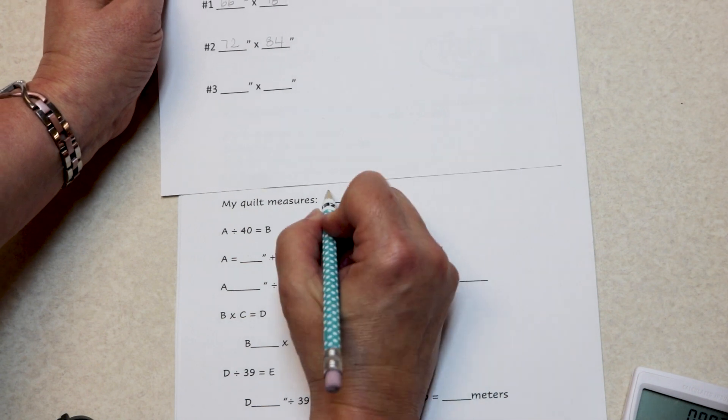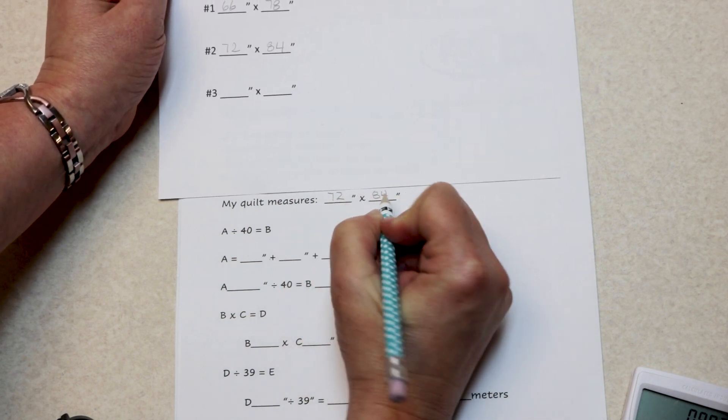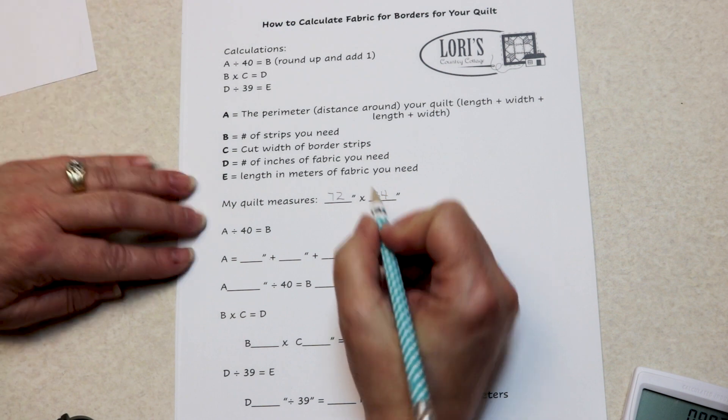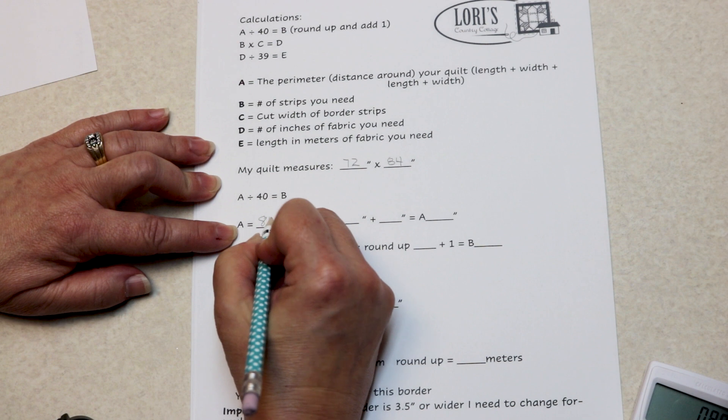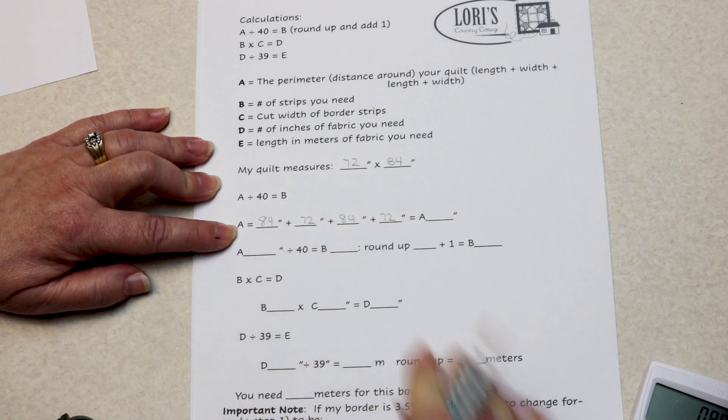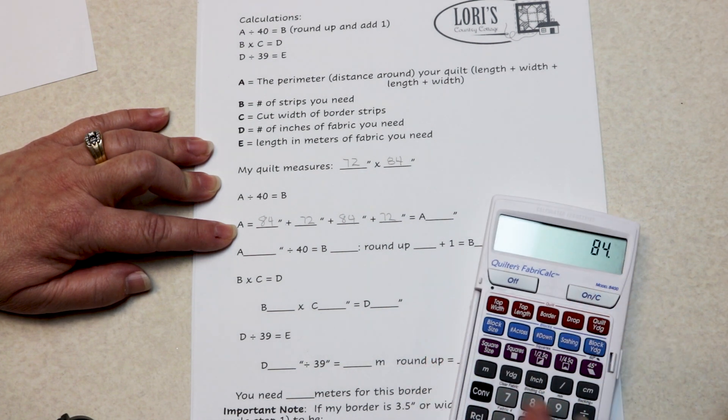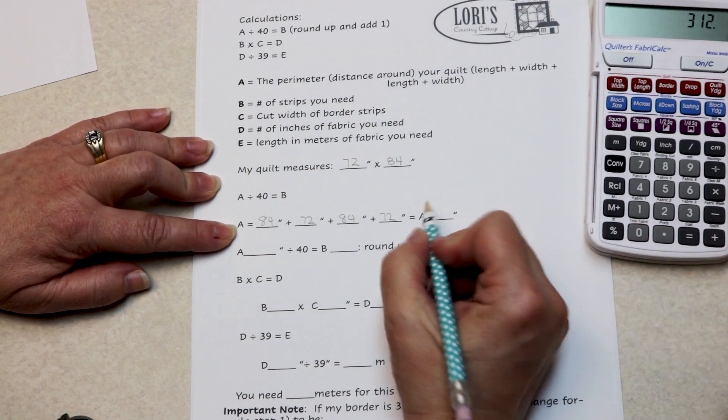My quilt measures now 72 by 84. Let's figure out the perimeter of my quilt. 84 plus 72 plus 84 plus 72 is 312 inches.